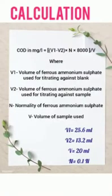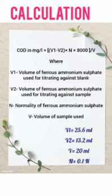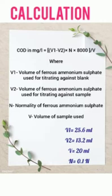Calculation. The chemical oxygen demand COD in mg per litre can be calculated using the equation: (V1 minus V2) into N into 8000, all divided by V. Where V1 is the volume of ferrous ammonium sulphate used for titrating against blank, V2 is the volume used for the sample, N is the normality of ferrous ammonium sulphate, and V is the volume of sample used.